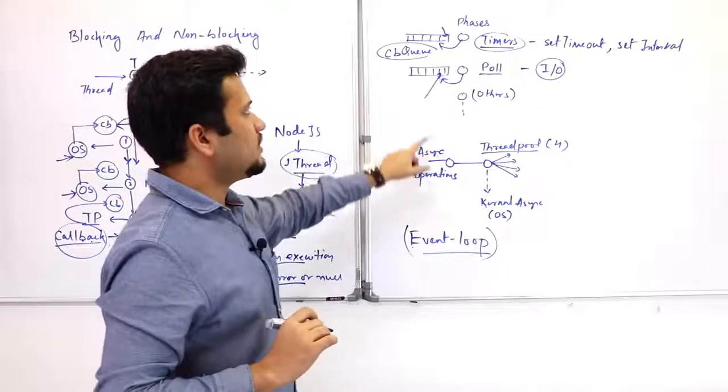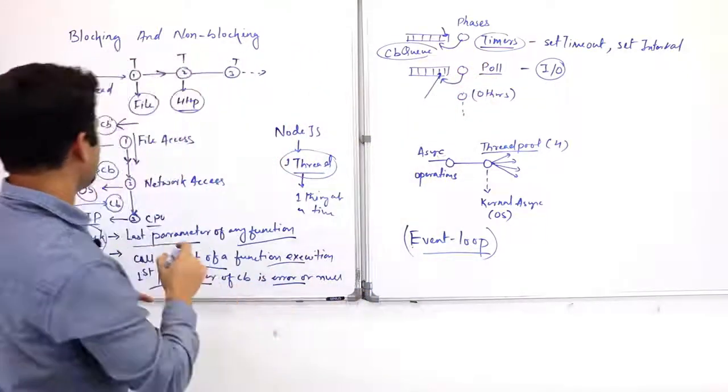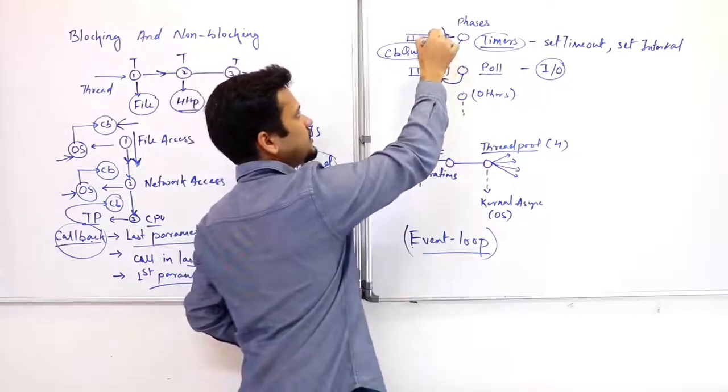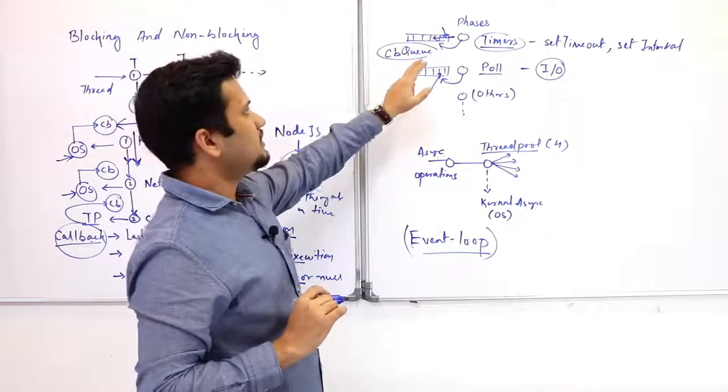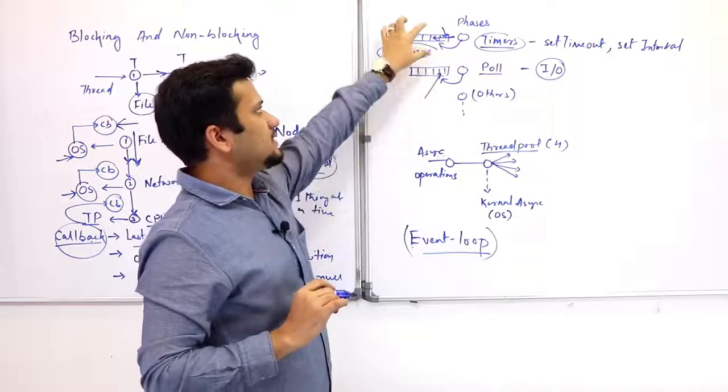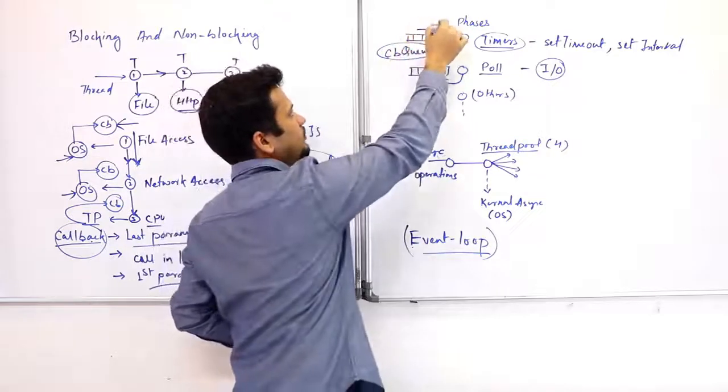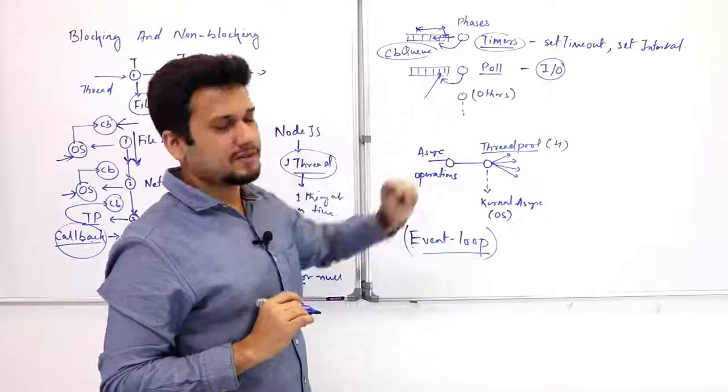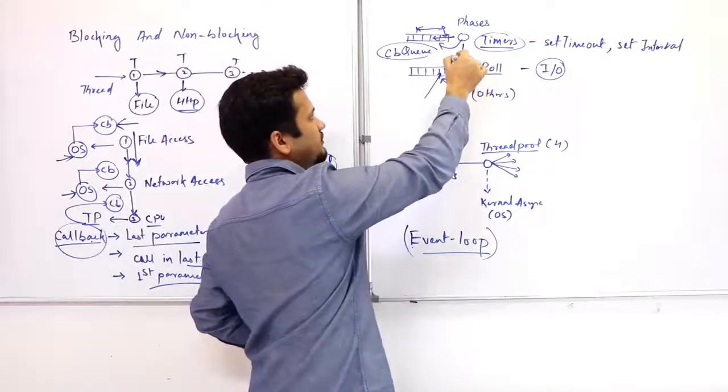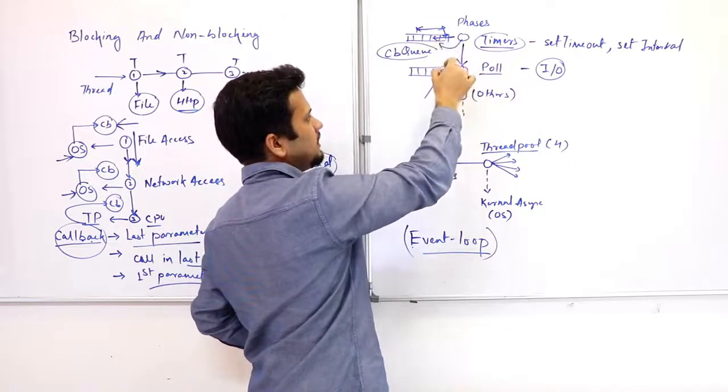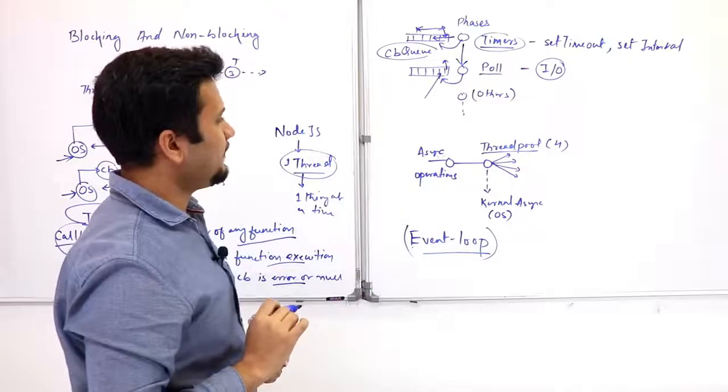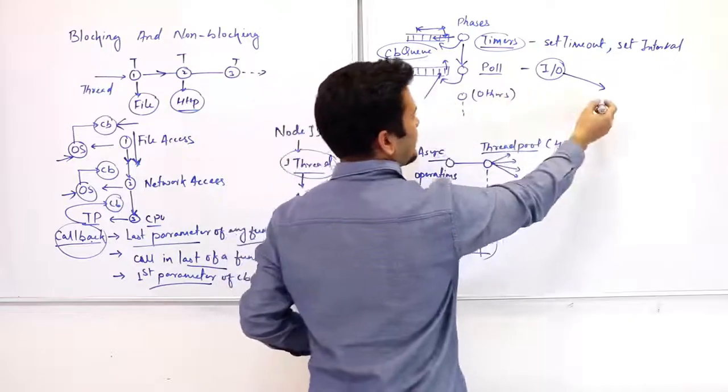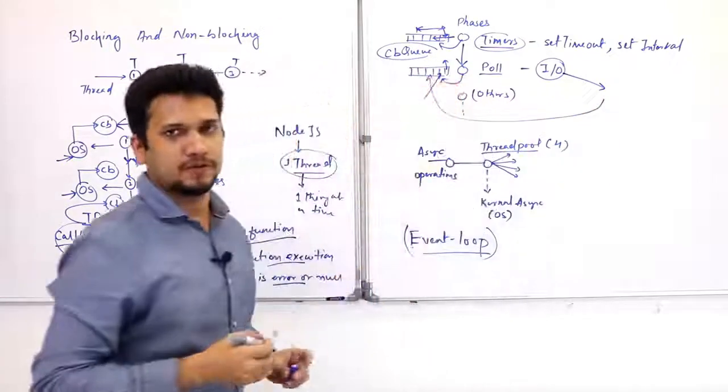Event loop gets into one phase at a time. This thread gets into one phase at a time. It traverses the queue and executes the callback, either when all the callbacks had been executed or there is a limit that we want—we can specify that this much amount of work for one phase has been done, you move to the next phase. Similarly, it will go into the next phase after the first phase, go into the other phase, and then execute the callbacks in the queue. The kernel will take the event and then provide a callback which will be enqueued.